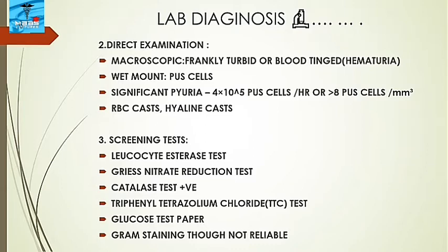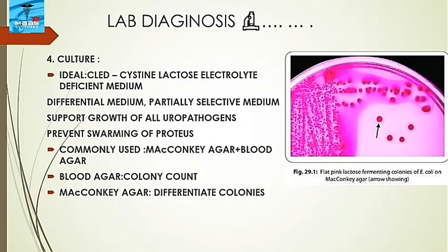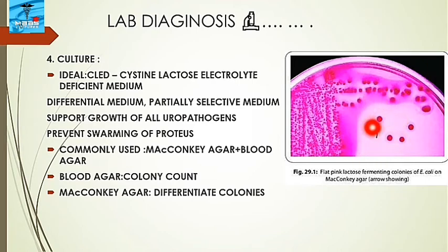The ideal culture medium is CLED (cysteine lactose electrolyte deficient) medium, which is differential and partially selective. It supports growth of all uropathogens and prevents swarming of Proteus. Commonly used media are MacConkey agar and blood agar. On MacConkey agar, E. coli produces flat, pink lactose-fermenting colonies. Blood agar is used for colony counting, while MacConkey agar is used for differentiation.